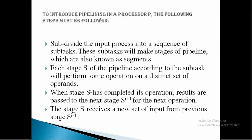To introduce pipelining in a processor, the following steps must be followed. Subdivide the input process into a sequence of subtasks. These subtasks will make stages of pipeline, which are also known as segments. Each stage SI of the pipeline, according to the subtasks, will perform some operation on a distinct set of operands. When stage SI has completed its operation, results are passed to the next stage SI+1 for the next operation. Stage SI receives a new set of input from previous stage SI-1.